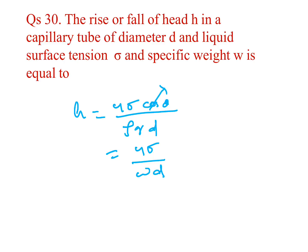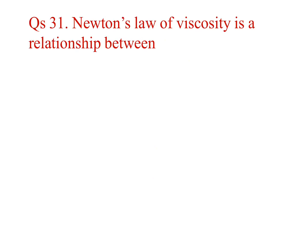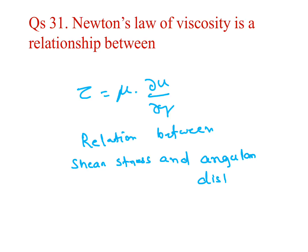Here cos theta equal to 1, theta is 0. Newton's law of viscosity is a relationship between tau equal to mu dy by dy. It's Newton's law of viscosity, a relation between shear stress and angular distortion or rate of change of velocity.